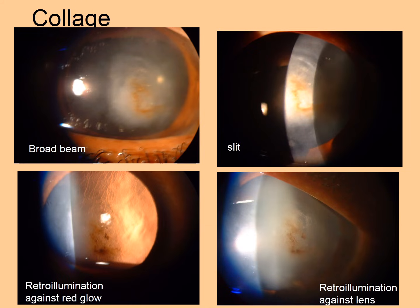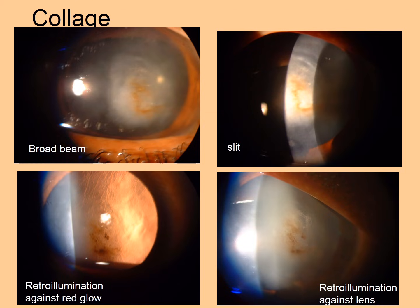We have gone through all the different methods of illumination one by one, and now we see the same pathology examined by different methods. Here is a corneal opacity with pigmentation due to old interstitial keratitis and ghost vessels within the cornea. The upper left picture shows a broad beam highlighting the opacity and pigmentation. The slit additionally shows breakdown of tissue within the pigmented area. Against the red glow, the ghost vessels are highlighted and pigmentation is visible, while retro illumination against the lens highlights the pigmentation rather than the opacity.